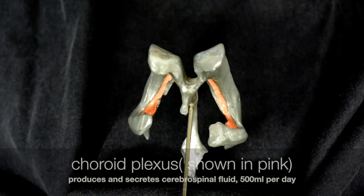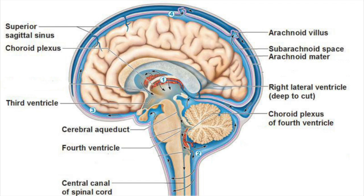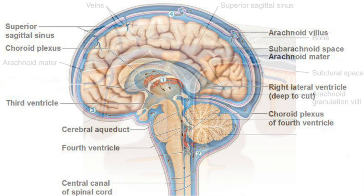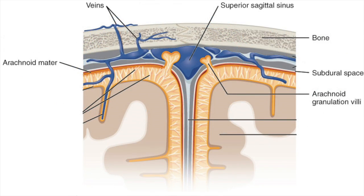This is where the choroid plexus is. The choroid plexus makes and circulates cerebral spinal fluid — it makes about half a liter a day — and it is circulated throughout the ventricles and in the subarachnoid space. Excess cerebral spinal fluid is drained through the arachnoid villi into the dural venous sinus.